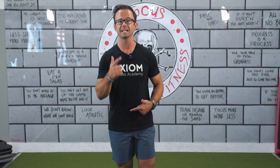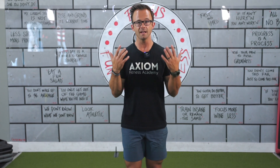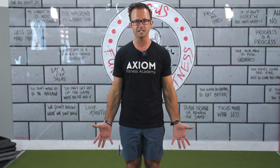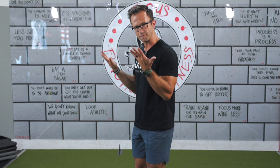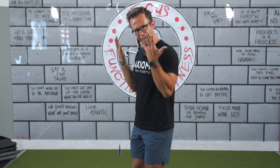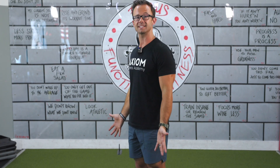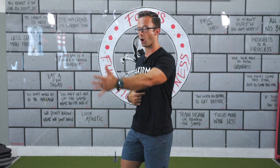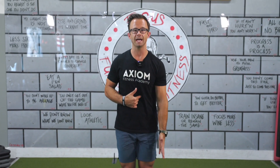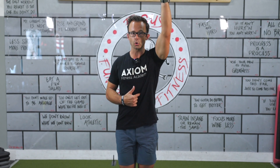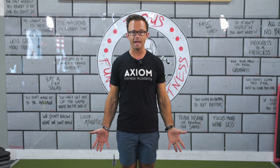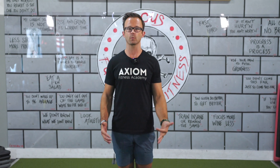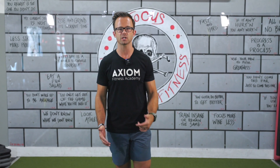When we bring that weight back down, we call that extension. An easy way to remember: extension is always going to bring us back to anatomical position. So a bicep curl — flexion at the elbow, extension brings us back. Same thing at the shoulder: shoulder flexion is when we bring that arm straight up overhead in the sagittal plane.